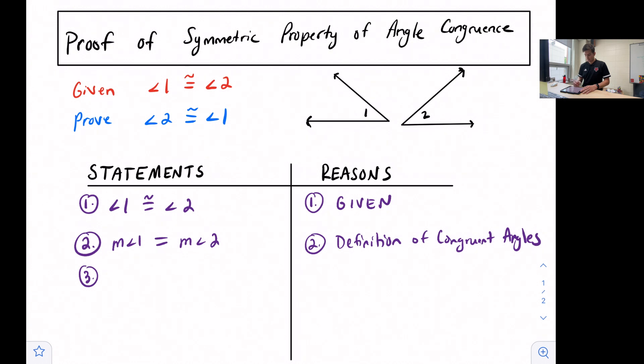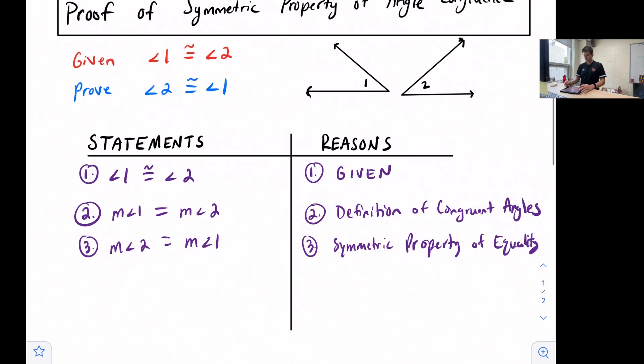Our third statement: if the measure of angle one is equal to the measure of angle two, the symmetric property tells us that the measure of angle two is also equal to the measure of angle one. And that is our symmetric property of equality.